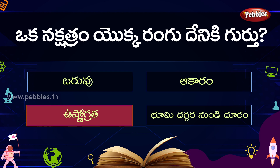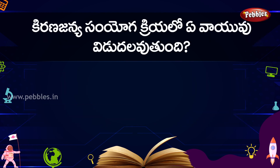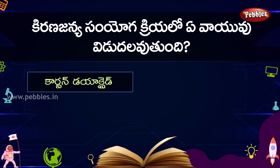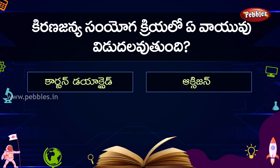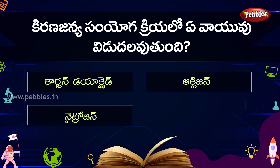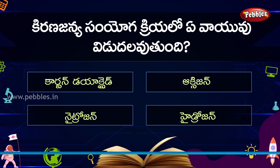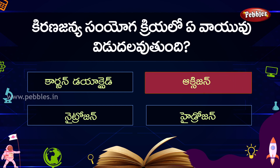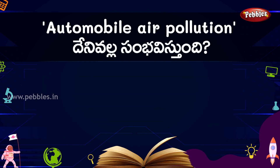Next question. In this world, what is the name of the most abundant gas? Options are: Carbon dioxide, Oxygen, Nitrogen, Hydrogen. The correct answer is Oxygen.